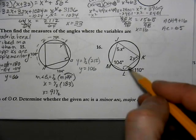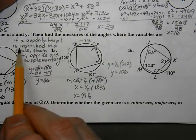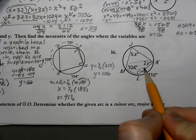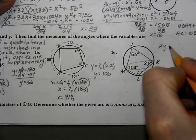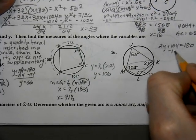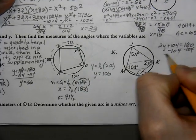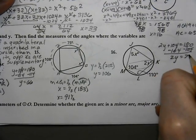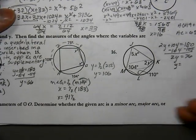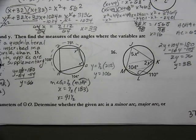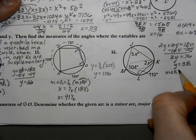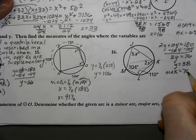In this case, if a quadrilateral is inscribed in a circle, opposite angles are supplementary. We have 2y plus 104 equals 180. Subtract 104 to get 76, then divide by 2, and y equals 38. The measure of angle K is double that, which is 76 degrees.